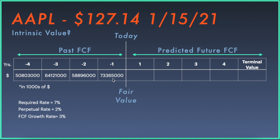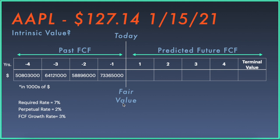Now we need to populate the future cells where we approximate our expectation of Apple's future free cash flow. That will serve as a proxy to calculate the intrinsic value of the stock today by discounting these future free cash flows to today's price using some required rate of return. This approach is called the discounted cash flow model. We divide that fair value by the number of shares outstanding to get the intrinsic value per share. If the market price drops below that intrinsic value, it's a signal to buy; if it's far above, the stock may be overpriced.